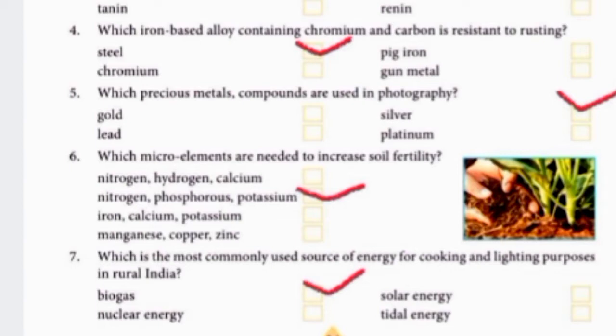Which is the most commonly used source of energy for cooking and lighting in rural India? In rural areas, the source of energy used is biogas. Biogas is made from the waste of animals.